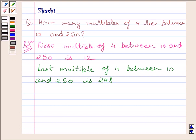Now we get the series of multiples as 12, 16, 20, 24 till 248. Clearly we can see this is an AP.